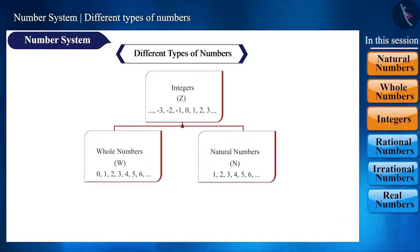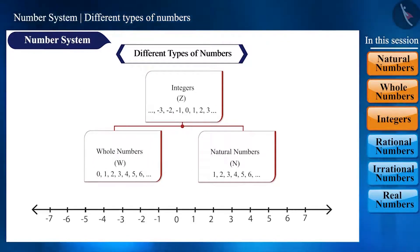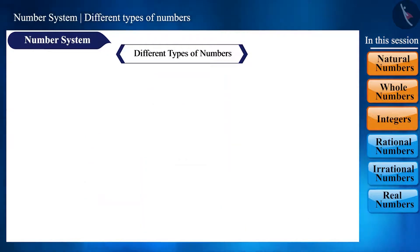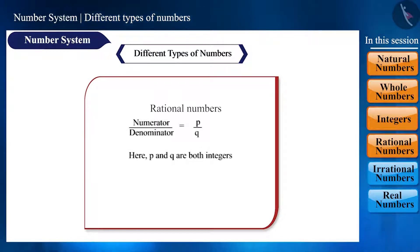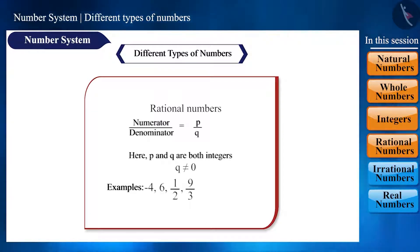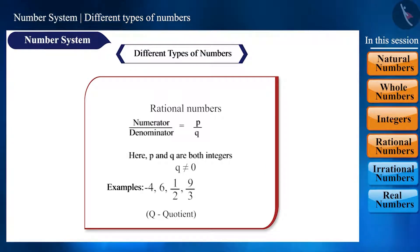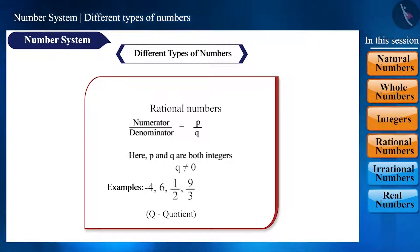We have seen how these numbers are represented on the number line. Now we will talk about rational numbers. A rational number is one we represent in the form p by q, where both p and q are integers and q is not 0. We refer to it with the symbol Q, which is derived from the English word quotient. But why quotient? Because p by q is a fraction that gives us the quotient.